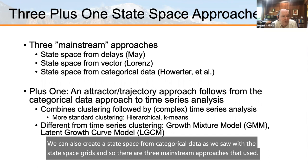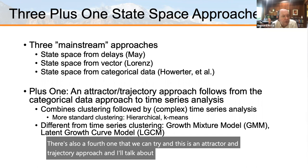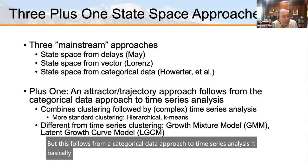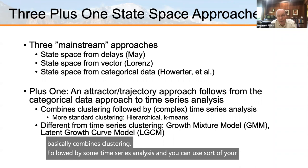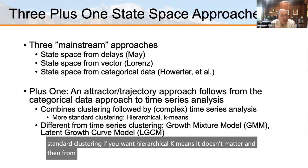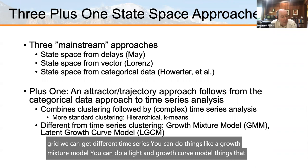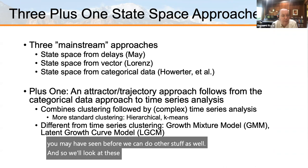If we want to do things with the state space approach, there are three mainstream approaches. One: create a state space from delays — that's what I did with May's data, the magic trick, with delay of one creating a two-dimensional state space. Two: create a state space from a vector of measurements, like Lorenz used three variables. Three: create a state space from categorical data, as seen with state space grids. There's also a fourth approach — an attractor and trajectory approach — which follows from categorical data, combining clustering with time series analysis.